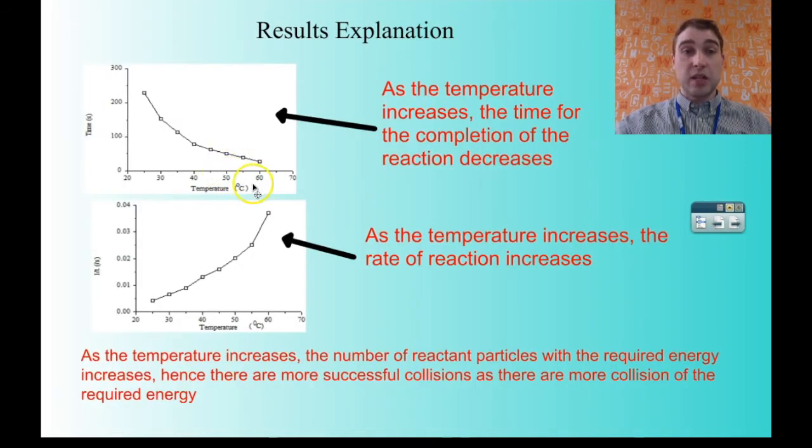Let's have a look at our results graphs. Our first one, we're looking at temperature versus time. As we increase the temperature, we can see the time taken for the cross to obscure decreases. We have a look at temperature versus rate. As the temperature increases, the rate of reaction increases. So, why does that happen?